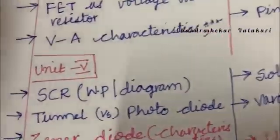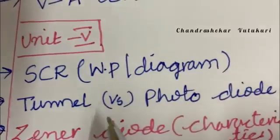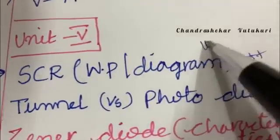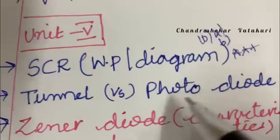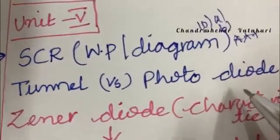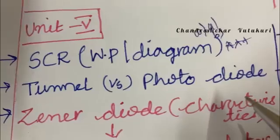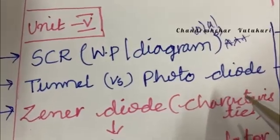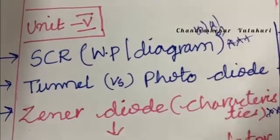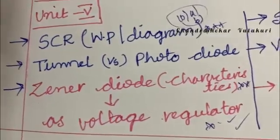Have come to the fifth unit for students who want to score good marks and grading. They need to work out SCR, the working principle and diagram is the topmost question which may occur in 10AB. Tunnel versus photo diode, out of all the diodes they may be asking the difference or the theory part question or short questions of all the diodes of unit 4. Zener diode along with the characteristics as voltage regulator is the topmost and gunshot question this time in 10A as well as 10B.